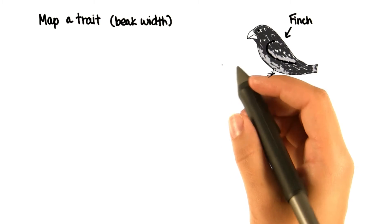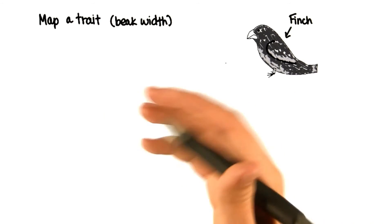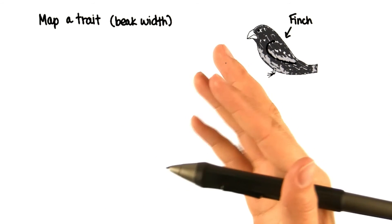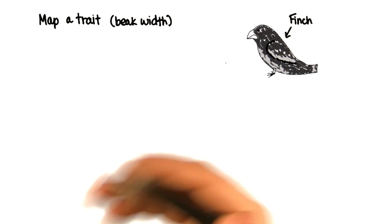If the mean beak width does significantly increase or decrease in size, this is referred to as directional selection. Then the environment allows the survival and reproduction of finches with bigger beak widths.